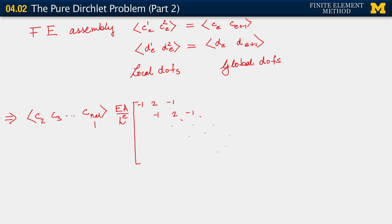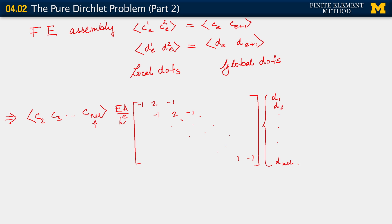So C_NEL corresponds to C1_NEL in terms of local node numbering. What we see is that this process essentially ends with a 1 on the diagonal here and a minus 1 here. This is multiplied by a column vector which is full — there is nothing lost in this column vector for d degrees of freedom — coming all the way down to D_NEL plus 1.